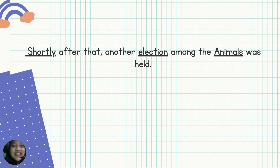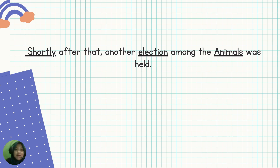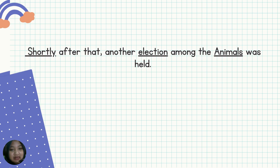Move to another sentence. Shortly dan election — ini struktur morfologinya, morfeme yang ditambah dengan derivational. Sedangkan yang animals — ini adalah morfeme yang ditambah dengan inflectional, jadi tidak mengubah kalimat kalau yang animals; kalau yang shortly sama election ini mengubah makna kalimat tersebut. Struktur sintaksisnya: shortly ini adalah adverb adverbial of manner. After that adverbial of time. Another election ini adalah subject. Among the animals ini adalah complement. Was held ini adalah verb.